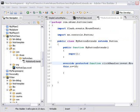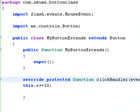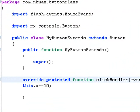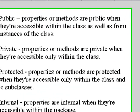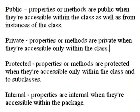Before we proceed to a more complicated example, I want to address the issue of names like public, private, and protected. Basically, it has to do with scope — where and when you can access these methods and properties. Public means accessible within the class as well as instances from the class. Private means accessible only within the class. Protected means accessible only within the class and in the subclass. Internal means accessible within the package. You'll be seeing these four names — they're not that complicated, just get used to them.